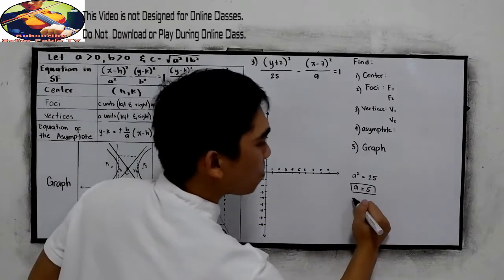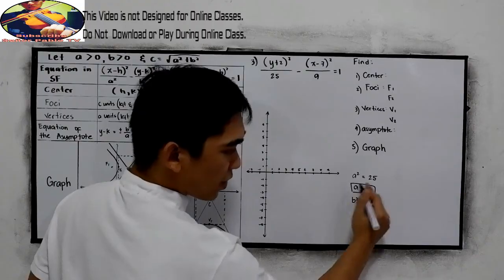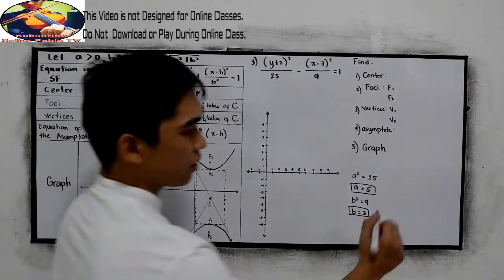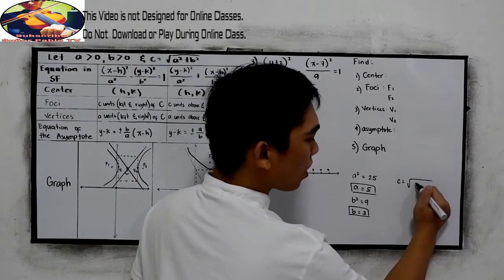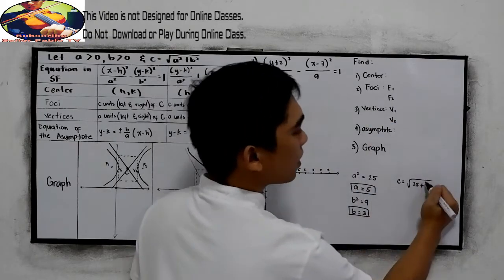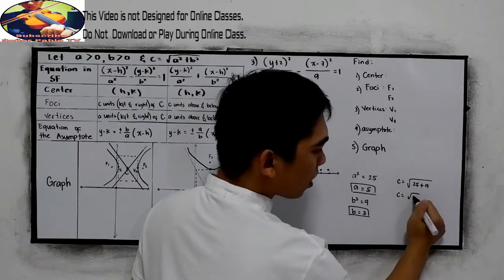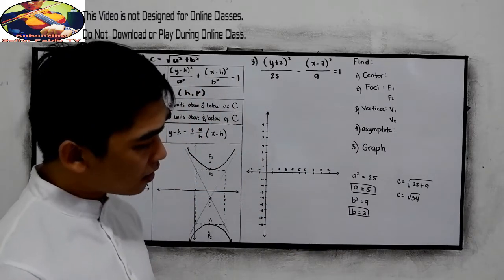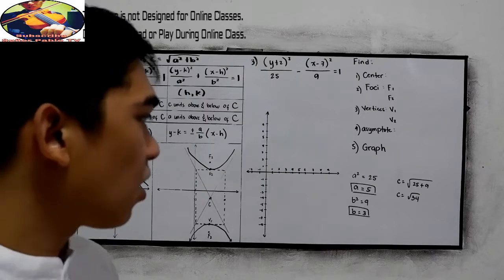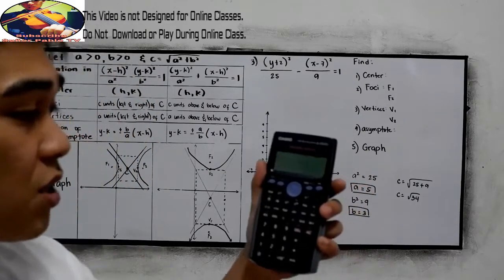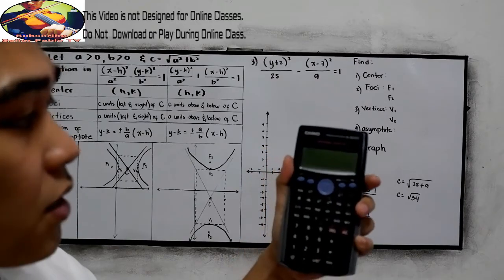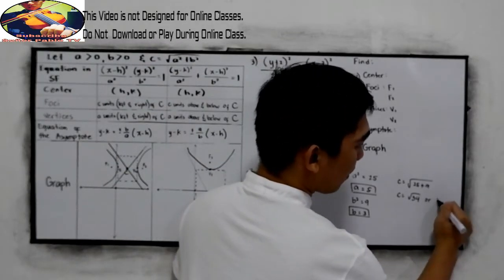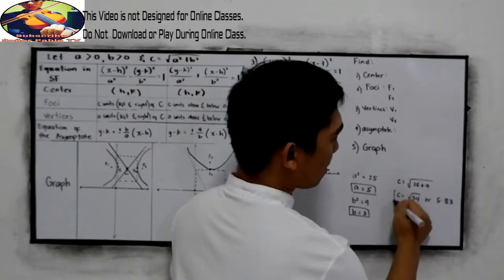Next, our b, b squared is equal to 9. Extract the square root, b is equal to 3. And for the c, c is equal to square root of 25 plus 9. So that is square root of 34. Notice that 34 is not a perfect square number. So we're going to find the decimal of square root of 34. To find that, you can use the calculator, square root of 34. That is in decimal 5.83. This is our c now.